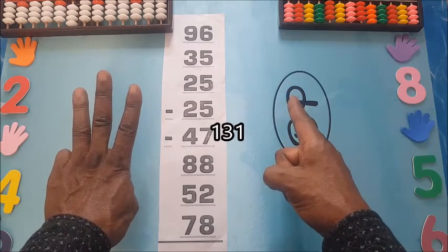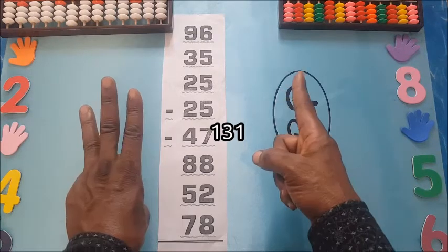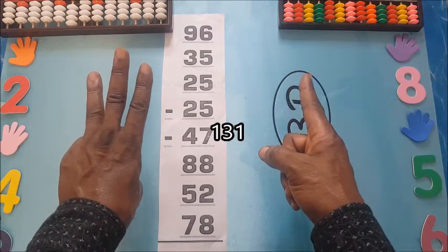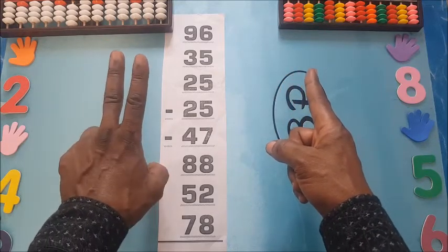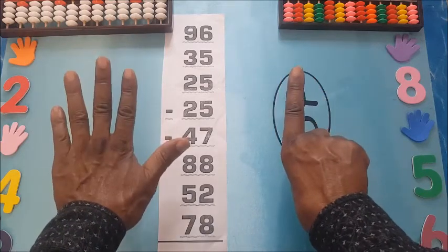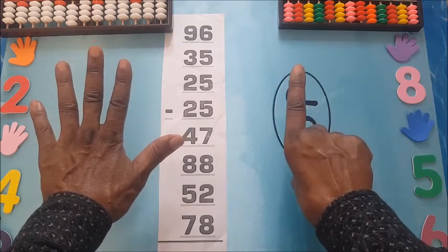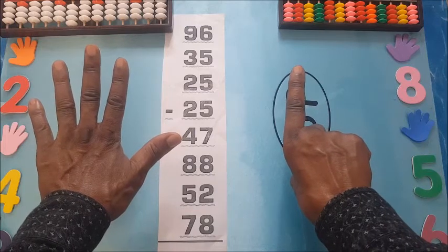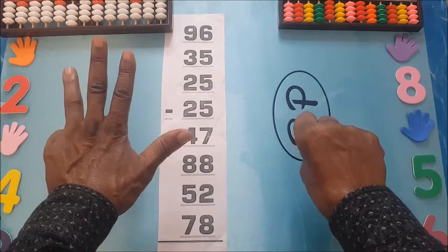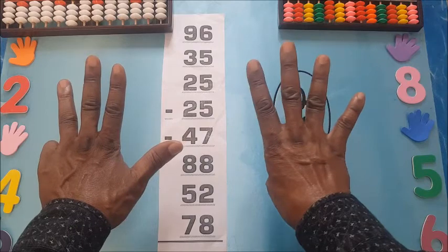131, take away 47. Starting from 131: 10, 20, 30, 40 — and then 7 is 1, 2, 3, 4, 5, 6, 7.